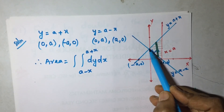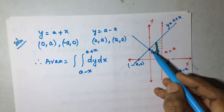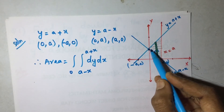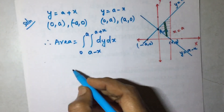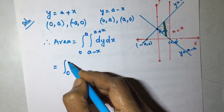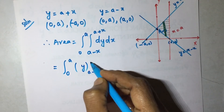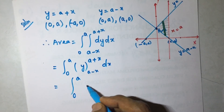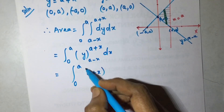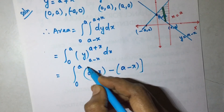For the limits of x: when the strip sweeps this area, x starts at 0 — since the point is 0, a — and slowly moves to the right until it touches x equal to a. So x goes from 0 to a. The area equals the integral from 0 to a of y evaluated from a minus x to a plus x, dx.